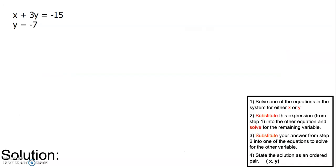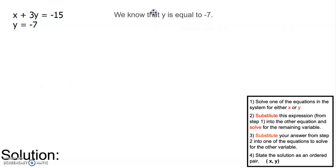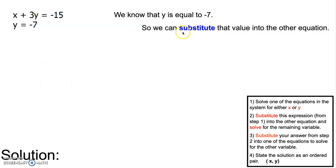Let's see what that looks like. For this system of equations, we have x plus 3y equals negative 15, and y is equal to negative 7. Step one says to solve one of the equations for either x or y. Notice that y equals negative 7 already has y isolated, so step one is actually done for us. Now we need to follow step two — we know that y is equal to negative 7, so we're going to substitute negative 7 into the other equation.